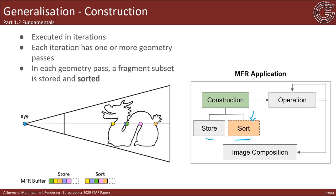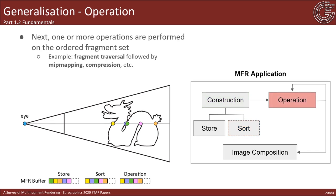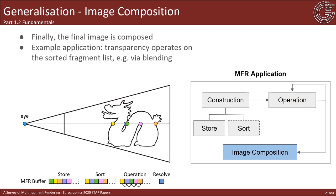Sorting can be applied either as a post-processing step or as an online algorithm, meaning fragments are sorted as they arrive. After construction, the next step performs one or more operations on the ordered fragment data structure. The most critical operation is fragment data traversal, followed by optional ones such as mipmapping and compression. The final part is image composition, which accesses and exploits the stored fragment information to compose the final output — for example, transparency merges the sorted fragment list by blending to produce the final output.